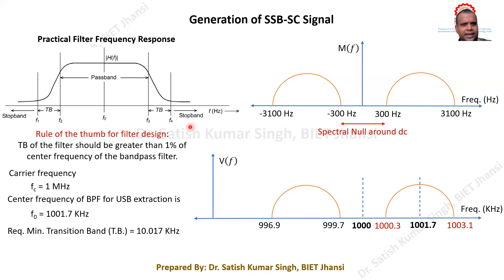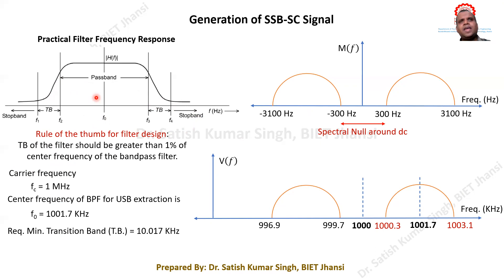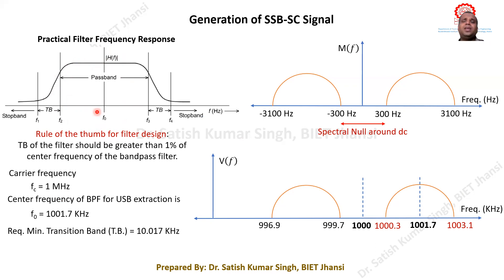There is a rule of thumb for filter designing: a filter can only be designed if its transition band is greater than 1% of its central frequency. If the transition band needs to be less than 1% of the central frequency, then it is not practically possible to design such a filter.